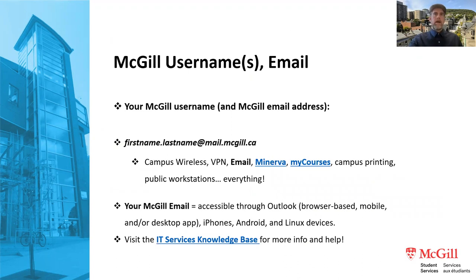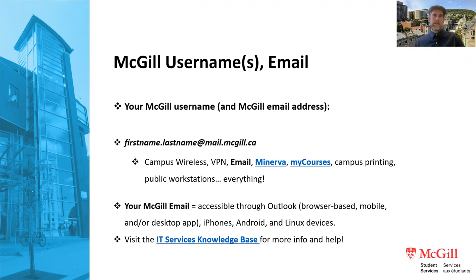Your username and email address are the same: generally firstname.lastname@mail.mcgill.ca, with a possible number at the end for common name combinations. You'll use this username to access all of McGill's platform services — the VPN, on-campus Wi-Fi, printing, Zoom, Office 365, MS Teams, Minerva, and myCourses. You can access your email through Outlook on browser, desktop, iPhone, Android, or Linux. There's a link to the IT Services knowledge base with setup instructions for every platform.